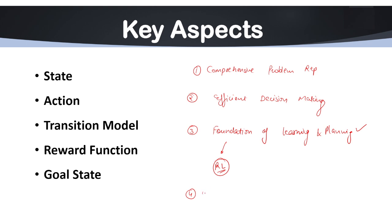Another reason is adaptability to complex and dynamic systems. Many real-world problems involve complex and changing — that is, dynamic — environments. State space representation enables AI to adapt to dynamic environments by modeling not only the static states, but also the transitions and probabilities of moving from one state to another.